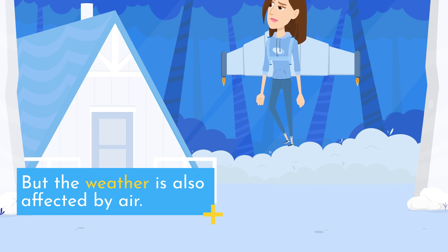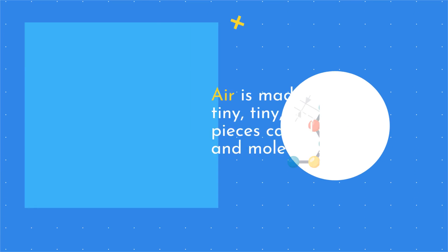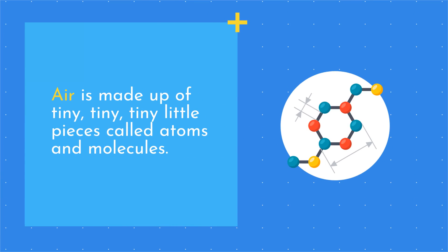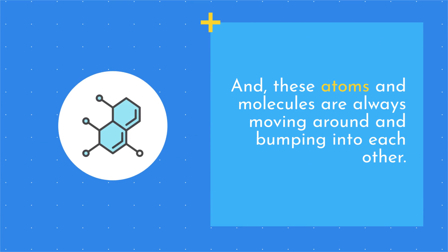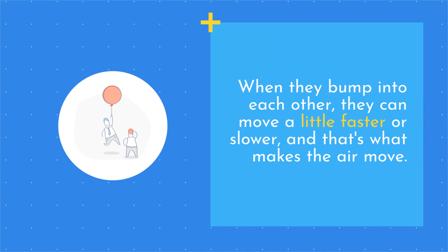But the weather is also affected by air. Air is made up of tiny little pieces called atoms and molecules. And these atoms and molecules are always moving around and bumping into each other. When they bump into each other, they can move a little faster or slower, and that's what makes the air move.